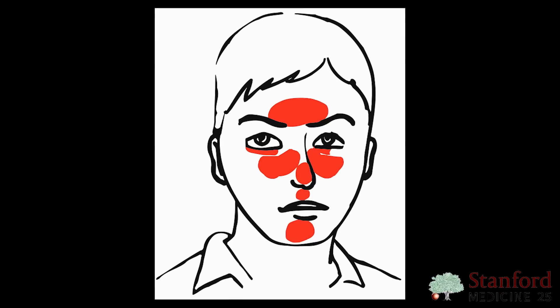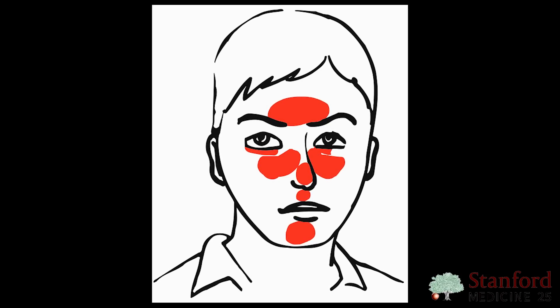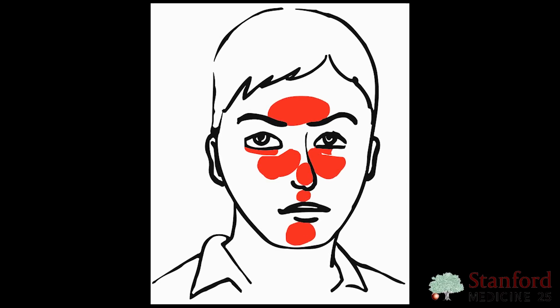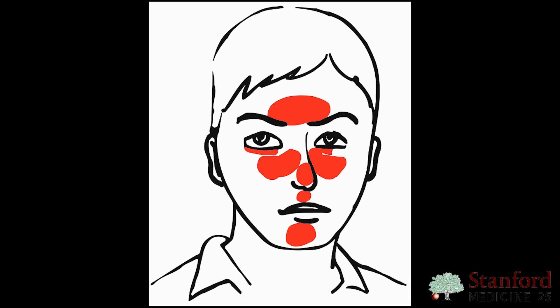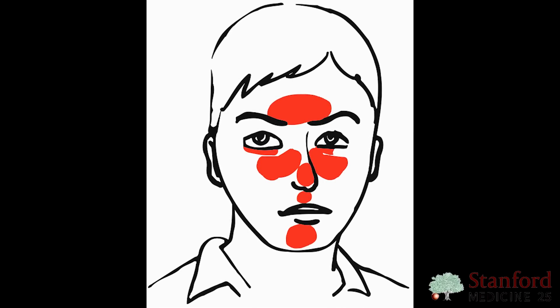Although rosacea typically would be distributed more over the central face, namely the medial cheeks, nose, forehead, and chin, which is not the distribution we're seeing here.